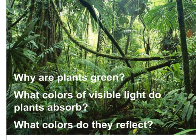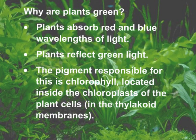So why again are plants green? Let's go over this one more time. What colors of visible light do plants absorb, and what colors do they reflect? Plants absorb reds and blues, and they reflect green — so we see green because plants do not absorb the wavelength of green light. As a recap: the pigment responsible for this absorption is chlorophyll, along with several other pigments, all located inside the chloroplasts within the thylakoid membranes.